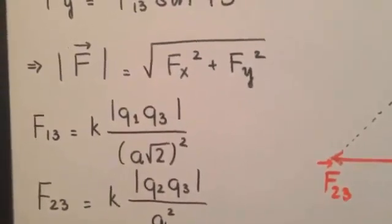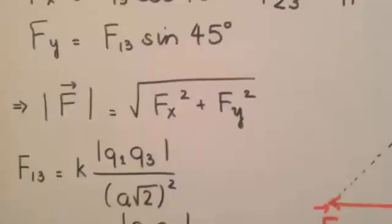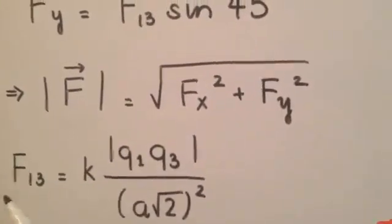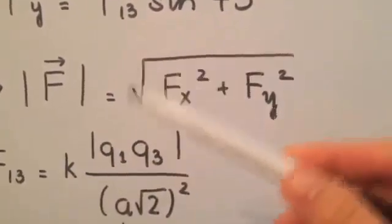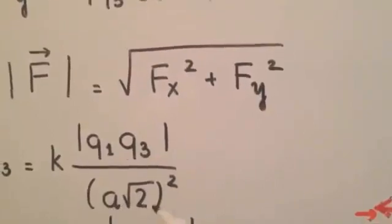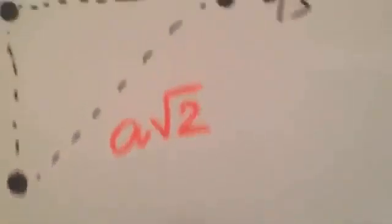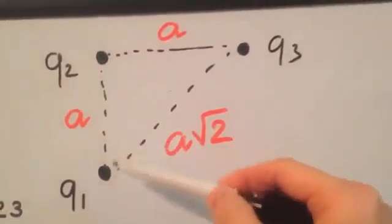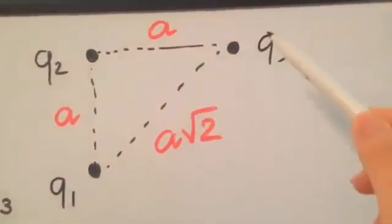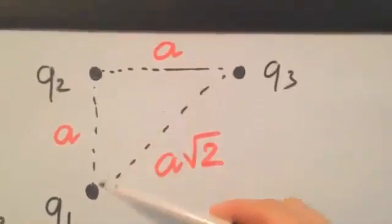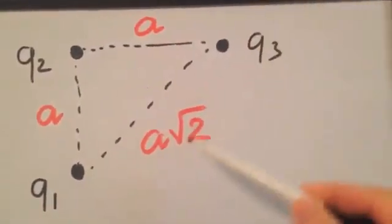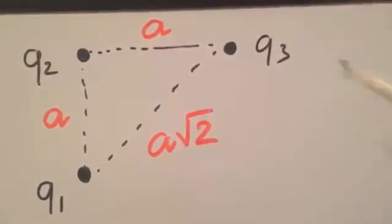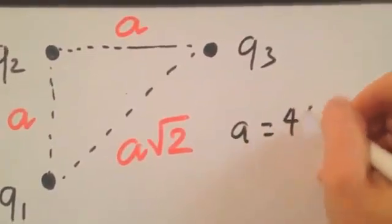Come back to Coulomb's law that we discussed before. Using the formula, we can get F13, the magnitude, equals K times the absolute value of Q1 Q3 divided by the distance between Q1 and Q3. Now, because Q1, Q2, Q3 are located at three corners of the square, the distance between Q1 and Q3 should be A square root of 2, where A equals 40 centimeters.